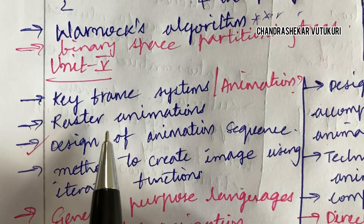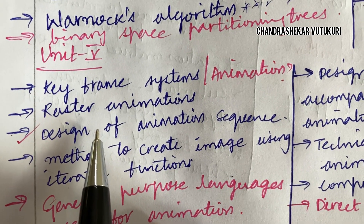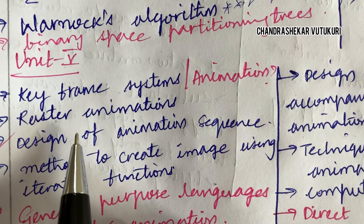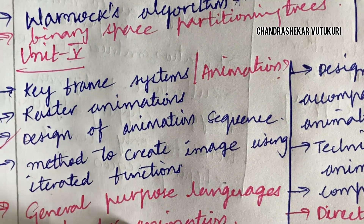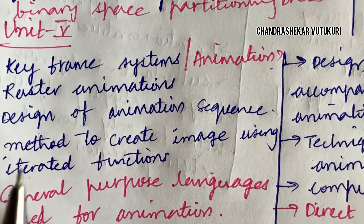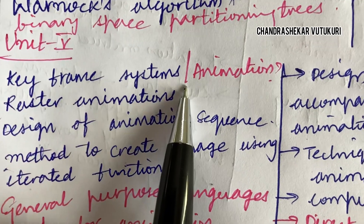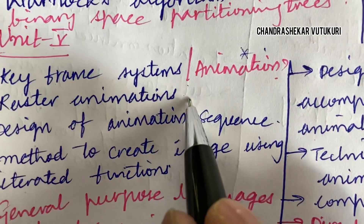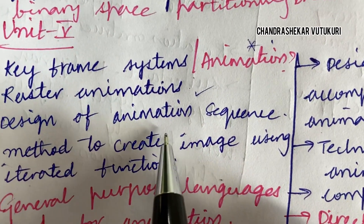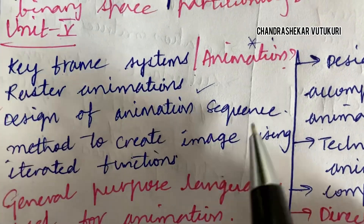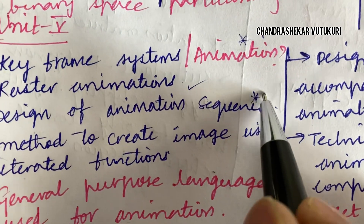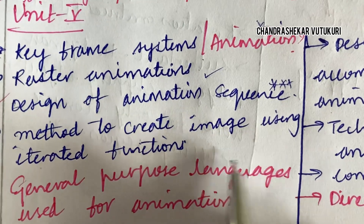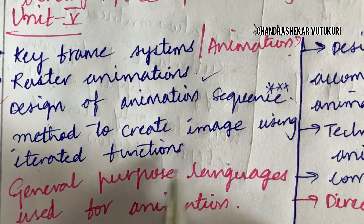Now let's jump into unit 5 — this is very short. You are supposed to work out these questions. First: frame systems and define animation, raster animations, as well as design of animation sequence. Design of animation sequence and its methods is set to be a topmost question. Method to create an image using iterated functions is also important.